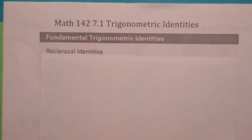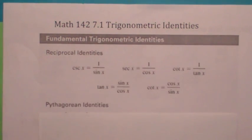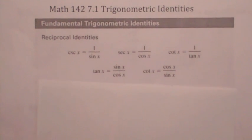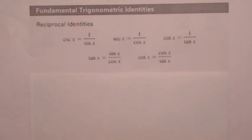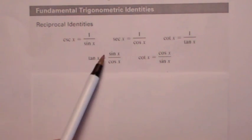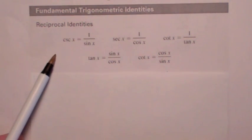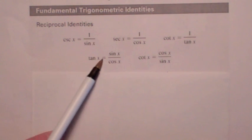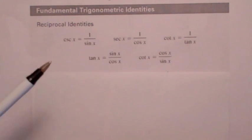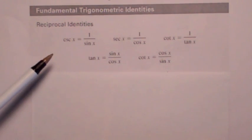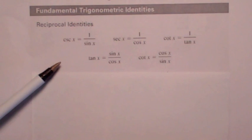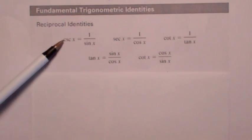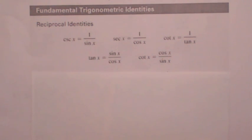It's important that you memorize these basic trig identities first. An identity is just an equation that's true for all x for which the equation is defined — it's always true. These first ones, the basic reciprocal identities, follow from the definition of unit circle trig. If the sine was the y-coordinate, then the cosecant was 1 over the y-coordinate, and so on.